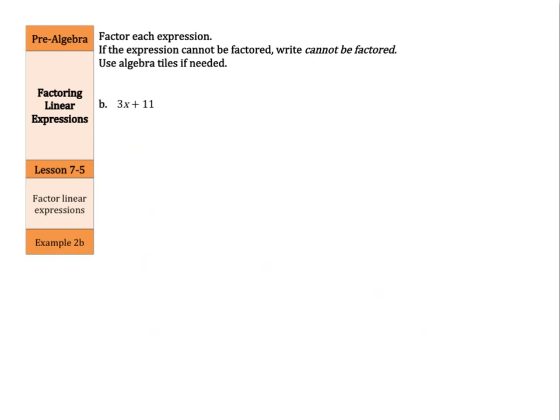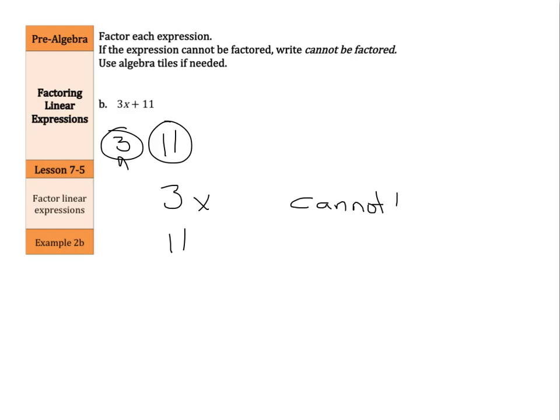Note that the 12 we found as the GCF is the same as these 12s here. Ask yourself: 12 times what is 12x? x. 12 times what is 48? 12 times 4. You can see how we rewrote that as 12 times the quantity x plus 4. Now when we look at example B, to factor the expression 3x plus 11, let's look for the GCF of 3x and 11. Well, 3 is 3 times 1, so it's just 3. And 11 is 11 times 1, so it's just 11. So 3x and 11 have no common factors. When this happens, the expression cannot be factored.